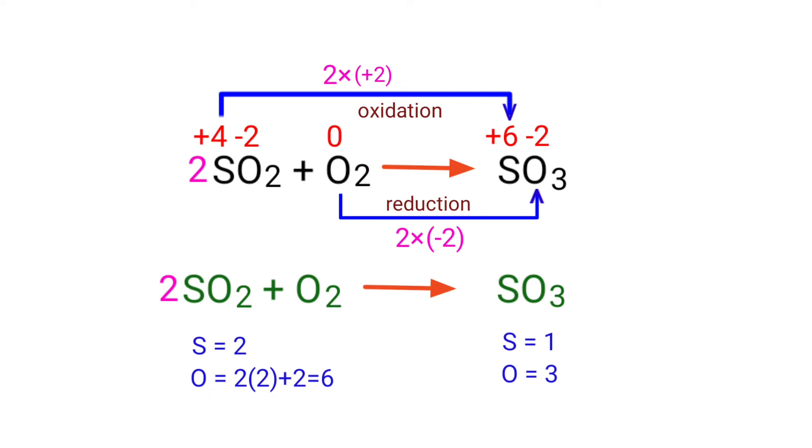The number of atoms are not balanced on both sides. To balance the chemical equation, we need to make use of coefficients. A coefficient is a number that we place in front of a chemical formula. In this equation, we need to balance the sulfur and oxygen atoms. To do this, we need to put a coefficient of 2 in front of SO3.